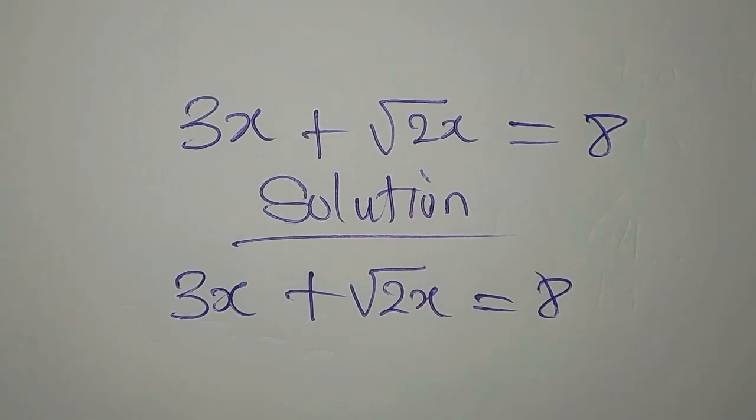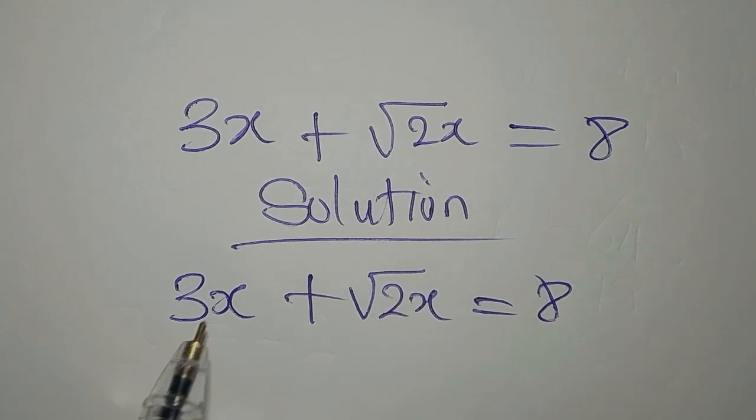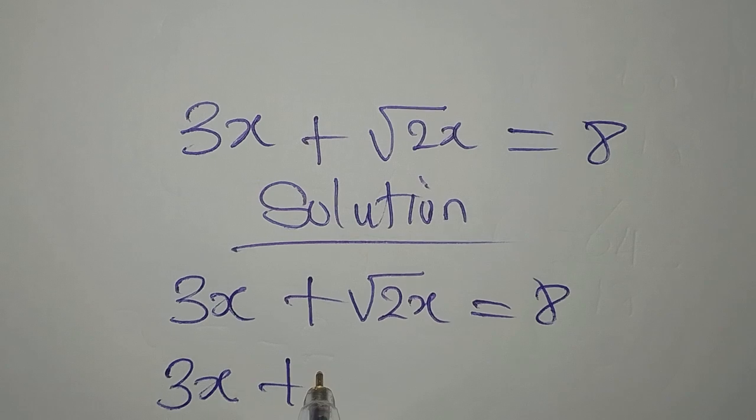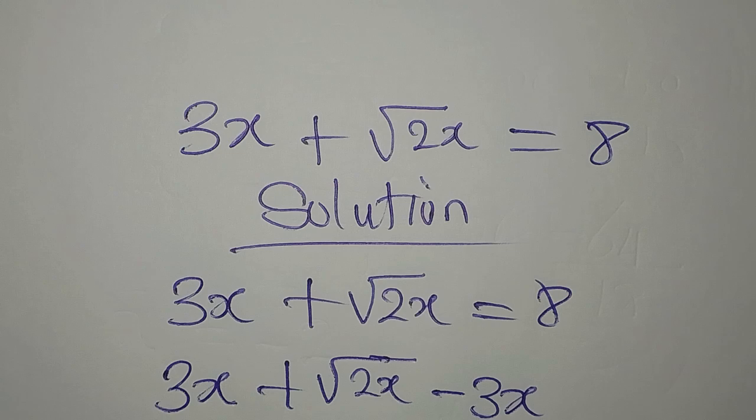Our target is to make the square root term the subject. We need to remove the 3x from here, so we write 3x plus square root of 2x, then minus 3x, since we want to move this from here.